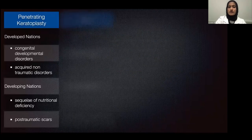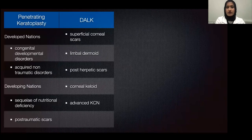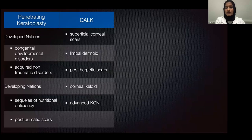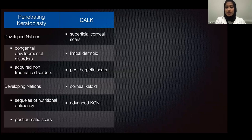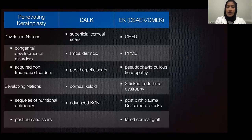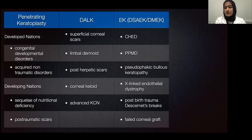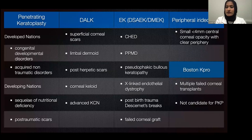Looking at the indications for different types of surgeries: penetrating keratoplasty, which is a full thickness corneal transplant, is used in developed nations for congenital developmental disorders as well as acquired non-traumatic disorders, and in developing nations for the sequelae of nutritional deficiency such as vitamin A deficiency and post-traumatic scars. DALK can be used for superficial corneal scars, limbal dermoids, post-herpetic scars, keloid, or advanced keratoconus. An endothelial procedure like DSEC or DMEC can be considered for CHED, PPMD, pseudophakic bullous keratopathy, X-linked endothelial dystrophy, post-birth trauma, Descemet's break, and failed corneal transplants. The sectoral iridectomy and Boston K-Pro are used for very small, specific indications.